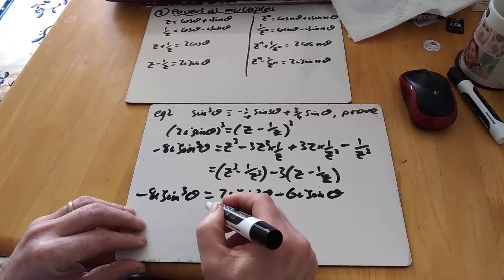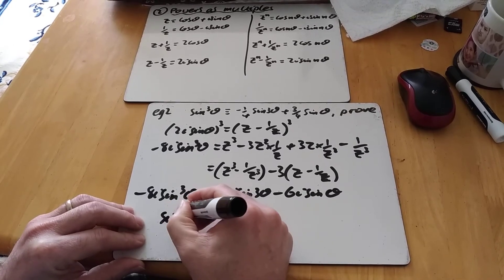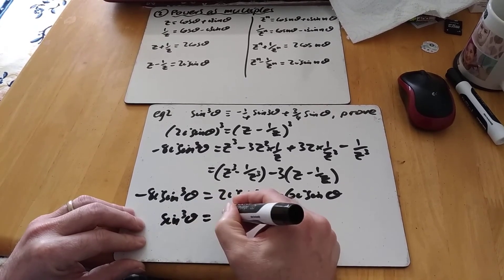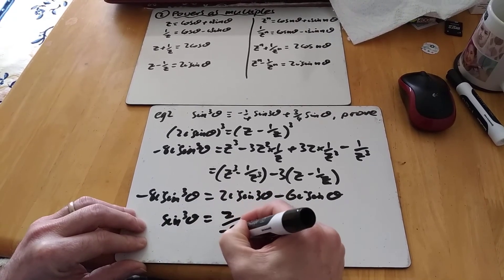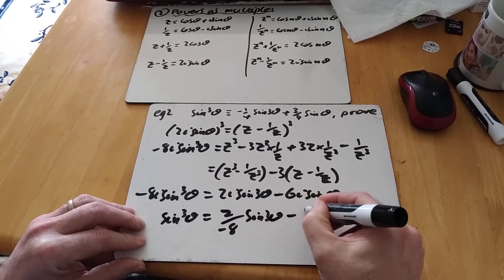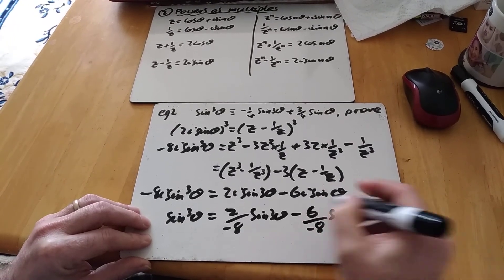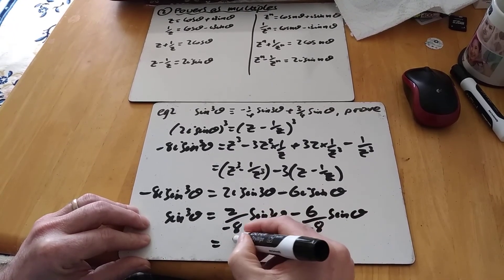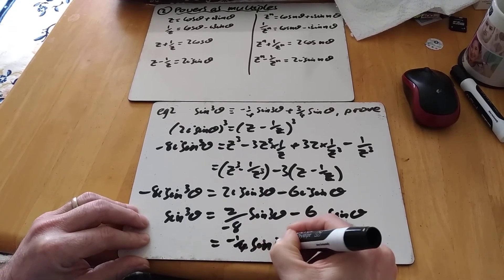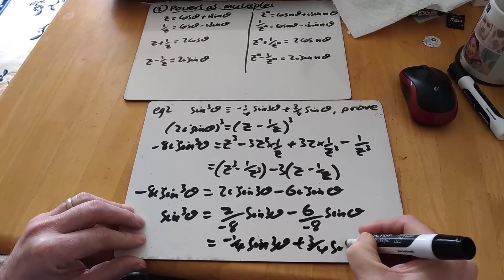So all I need to do now, I can cancel the i's out. I'm divided by minus 8. So because it's a show that, I'd write 2 over minus 8 sine 3 theta, minus 6 over minus 8 sine theta, to show that 2 over minus 8 is minus 1 quarter sine 3 theta. And then that's plus 3 quarters sine theta.